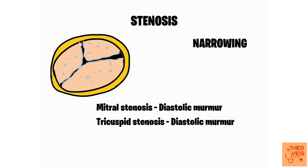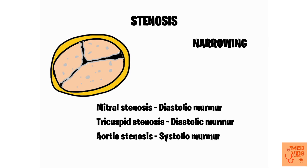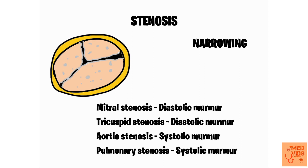The same mechanism happens in tricuspid stenosis. In aortic stenosis, the aortic valve gets stenosed and the ventricle has to pump blood with great force during systole to make blood flow through the narrow aortic valve, producing a systolic murmur. There is nothing happening during diastole in aortic stenosis — the obstruction is during systolic flow. Pulmonary stenosis follows the same mechanism, also producing a systolic murmur.